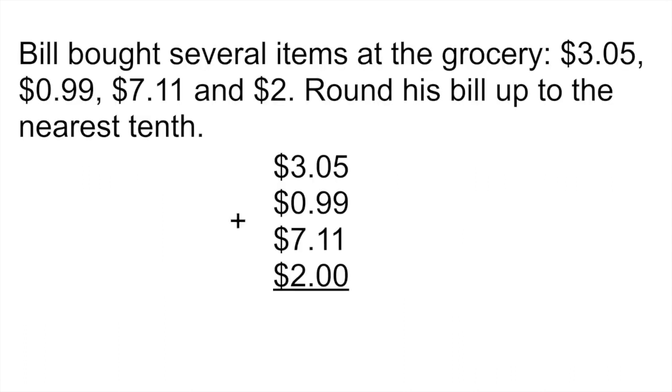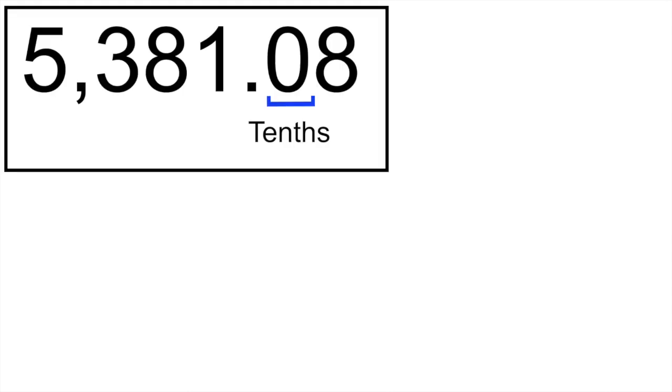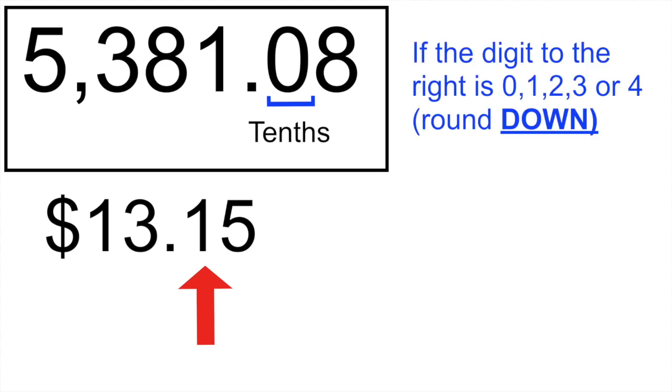So the first thing you would do, just add his bill. It's thirteen dollars and fifteen cents. And that's the position that we're interested in looking at, the tenths, so right there. The rule for rounding is this. So if you look at the number to the right of where you have to round up, in this case you would look at the five.